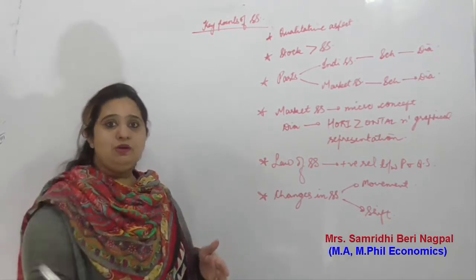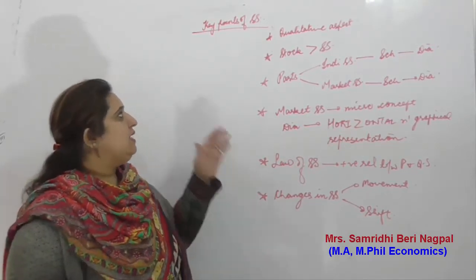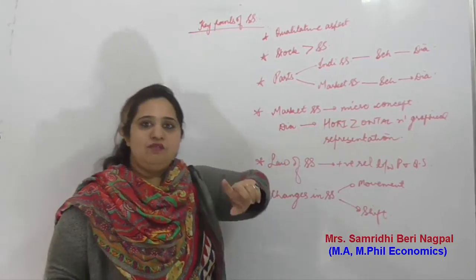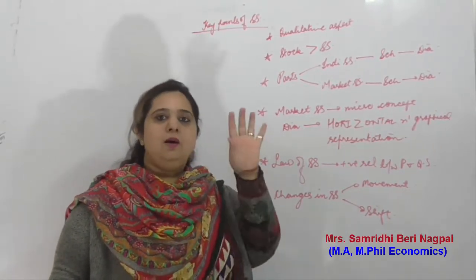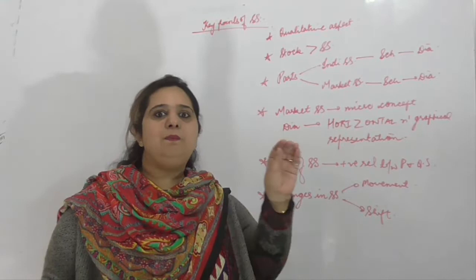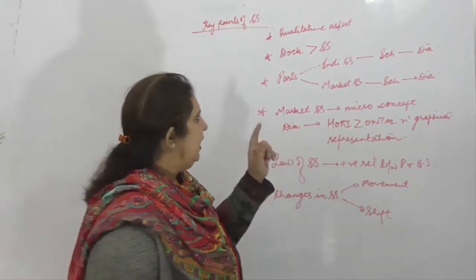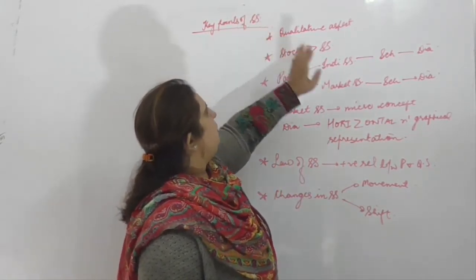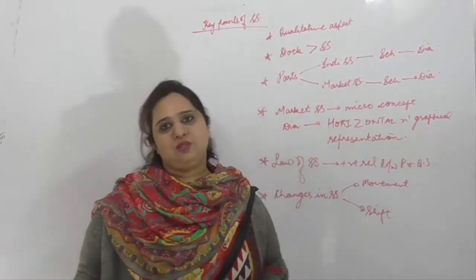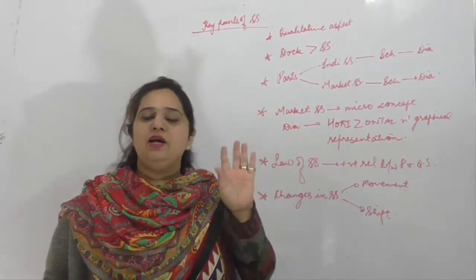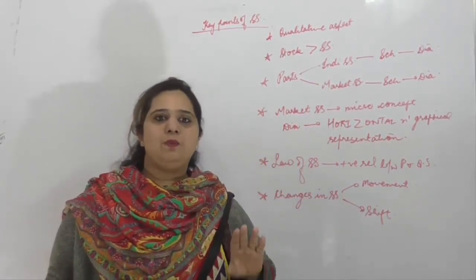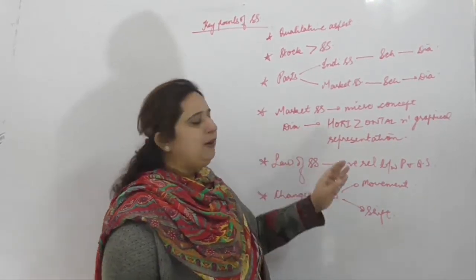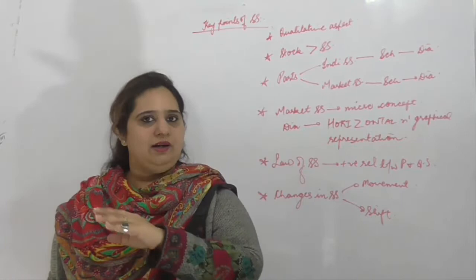So that you people are able to revise the whole chapter. सबसे पहले जभी भी आप Supply देखते हो — Supply किसके viewpoint से है? Producers. Producers का main motive क्या रहता है? Profit Maximization. Theory of Supply एक qualitative aspect है, क्योंकि यह आपको सिर्फ directional change बता रहा है।